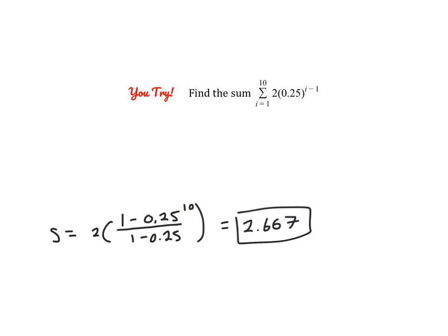Remember that this formula is for the first n terms of a series. If you are asked to find a sum from, say, term 5 to term 12, you would have to find the sum of the first 12 and then subtract the sum of the first 4 — very similar to what we did with arithmetic series.